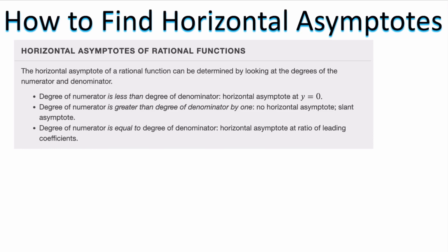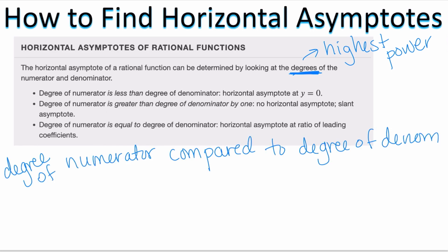An asymptote is a line that the graph approaches but never crosses or touches. In order to find a horizontal asymptote when we are given an equation, we're going to look at the degrees of the numerator and the denominator. By degree, we are referring to the highest power — the largest exponent. We're going to take the degree of the numerator and compare it to the degree of the denominator.